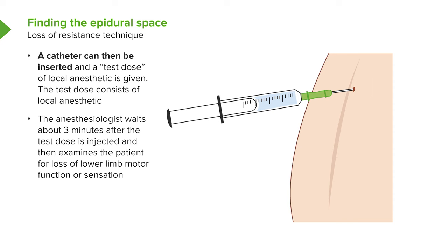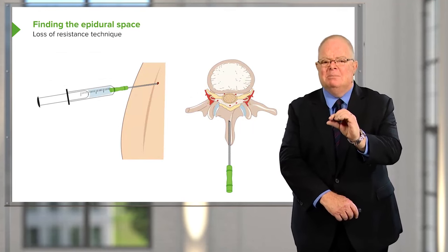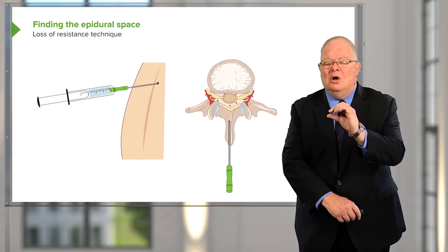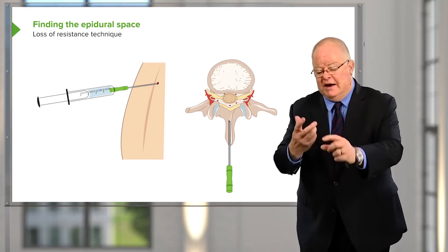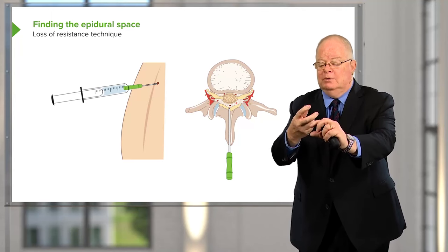Finding the epidural space requires technique because it's almost an imaginary space — not an open area, but packed with blood vessels and fat. Its major connection with the rest of the body is through the thorax, so its pressure changes the same way as chest pressure, and it is lower than surrounding tissue pressure. We insert the needle and can feel the ligamentum flavum — usually a tough ligament, though softer in pregnant women. While advancing, we apply pressure to a saline-filled syringe. As you pop through the ligamentum flavum, you get a sudden loss of resistance and the syringe empties.